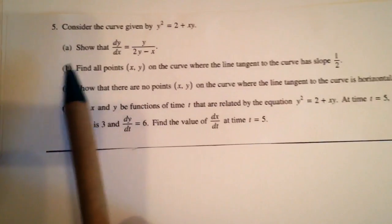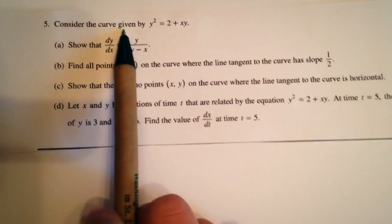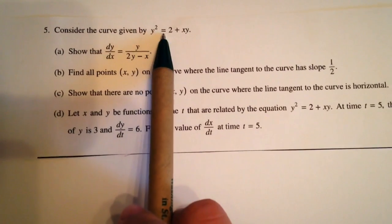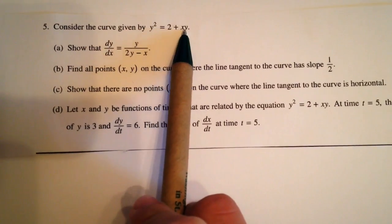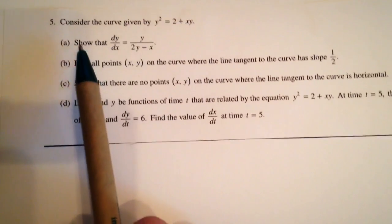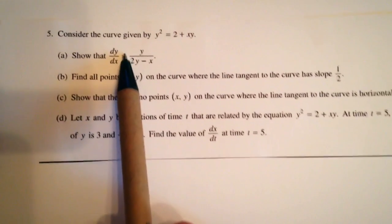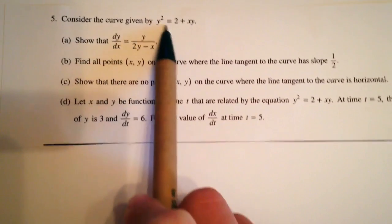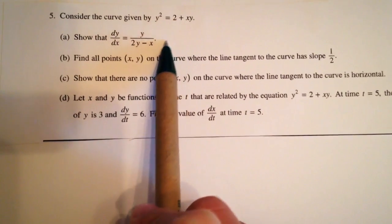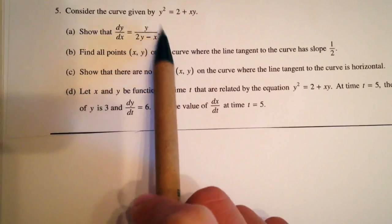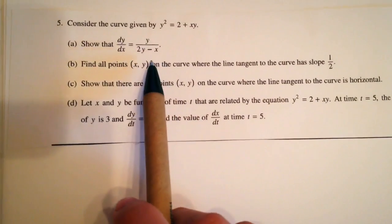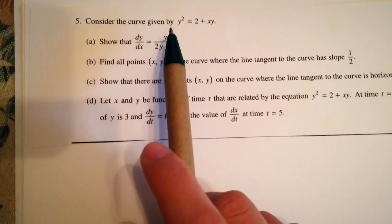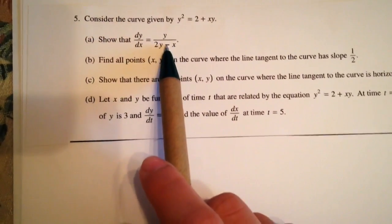In question 5, we are asked to consider the curve given by y squared equals 2 plus xy. For part A, we have to show that the derivative equals a given equation, and we use implicit differentiation.